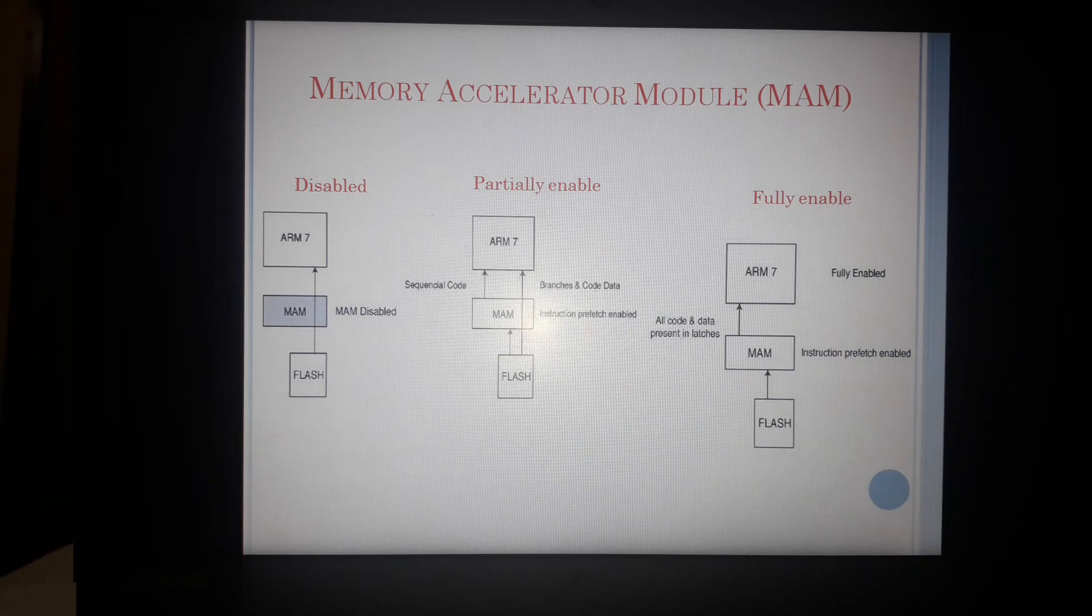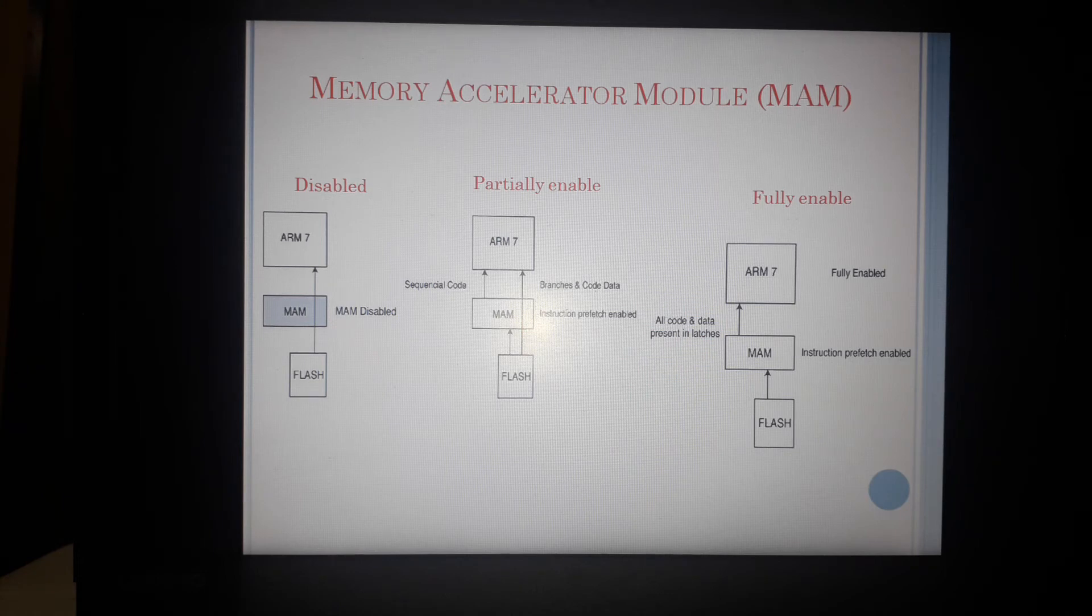Next is partially enabled. Partially enabled what we do is whatever is in the sequence, that is stored sequentially. If I have set of let's say 10 instructions and they are in sequence one after the other, they are fed to ARM through MAM. That is memory accelerator module. But if there is any loop or branch, that is where I have to go to a different address, then we make use of the direct mode of acting between ARM and flash. So there is no MAM used there.